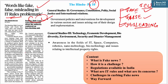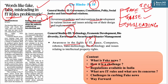This article talks about IT Intermediary Guidelines and Digital Media Ethics Code Amendment Rules 2023. Government policies and interventions for development in various sectors is an important theme under GS Paper 2, and awareness in the fields of IT is an important theme under GS Paper 3. In this discussion, we will cover what is fake news and how it is a challenge, current regulations in India, the IT rules and their concerns, challenges in curbing fake news, and a way forward.